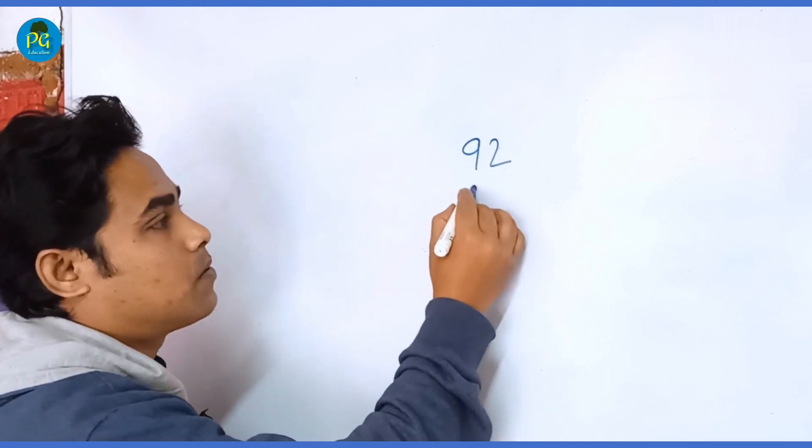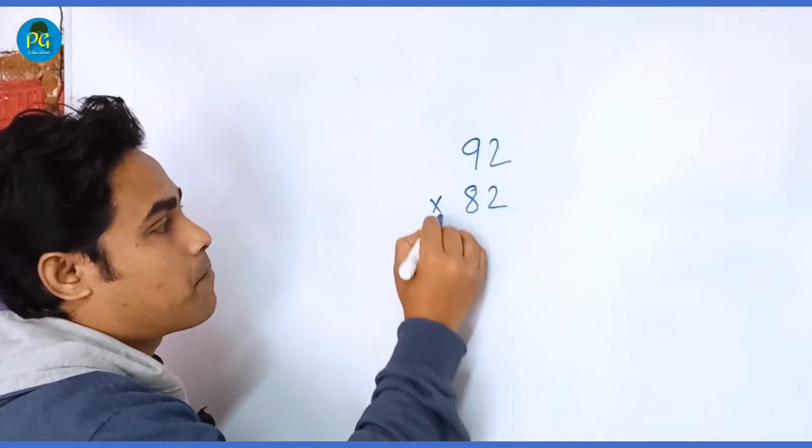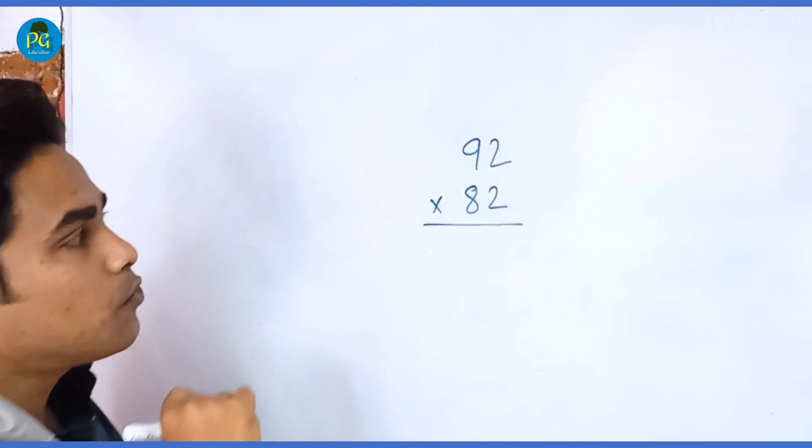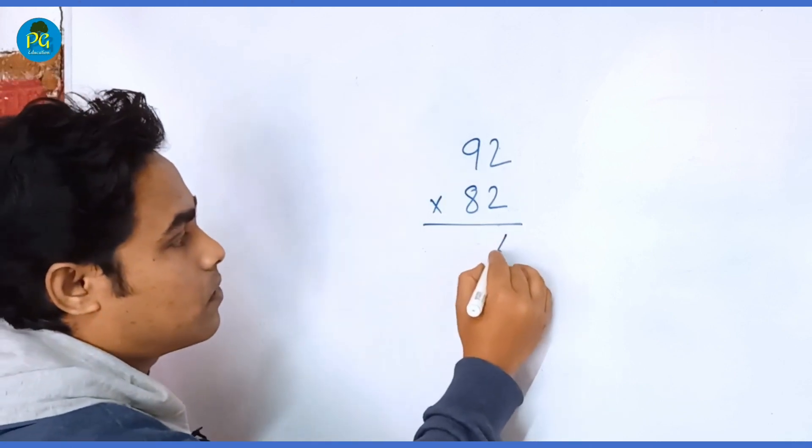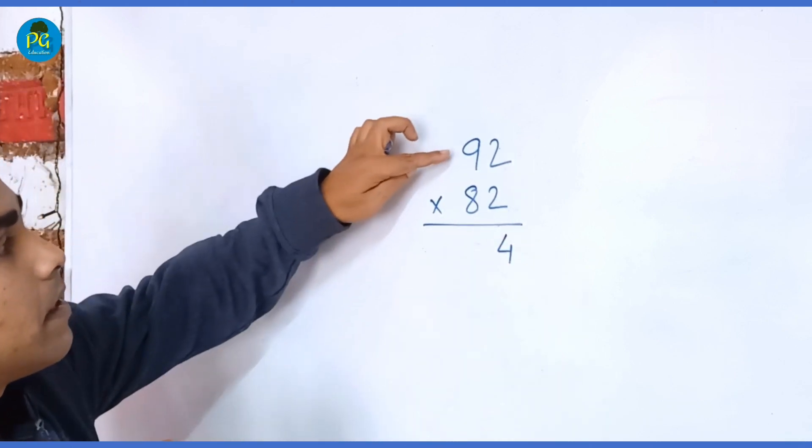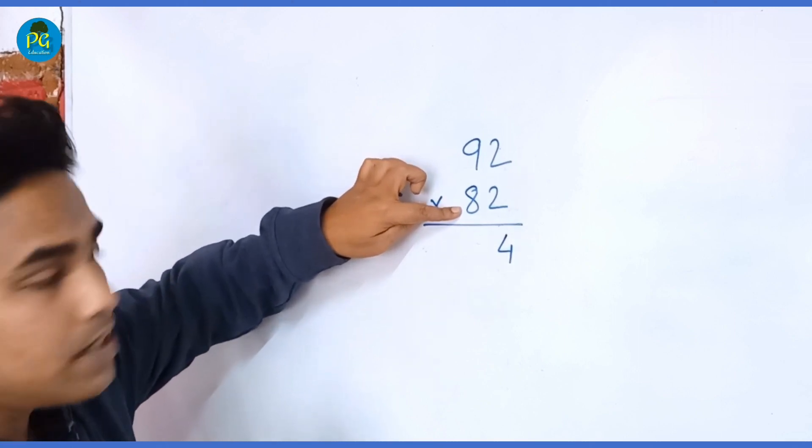92 and 82. So what we have to do is 2 into 2 is 4, then 9 plus 8 is 17. 17 into 2 is 34, right? Here 4 and 3 in hand.